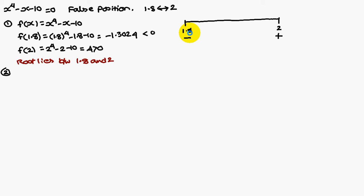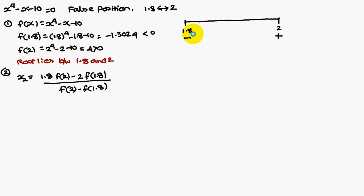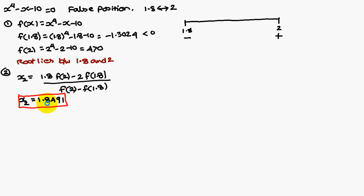Consider a real line and represent the numbers 1.8 and 2. For 1.8, it is a negative value, so I have given the symbol negative. For f(2), it is a positive value, I have written the symbol positive. By the false position method, x2 = (1.8 × f(2) - 2 × f(1.8)) / (f(2) - f(1.8)). If you simplify, you are going to get 1.8491.